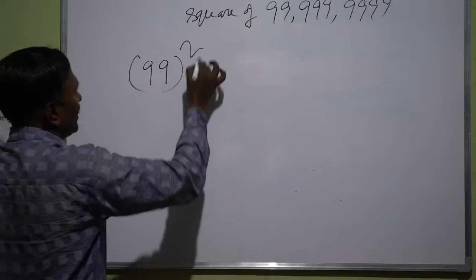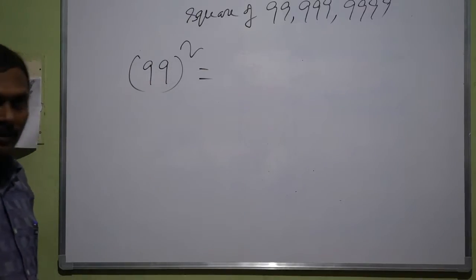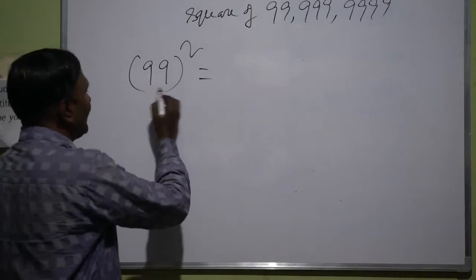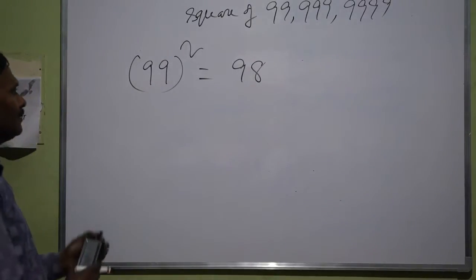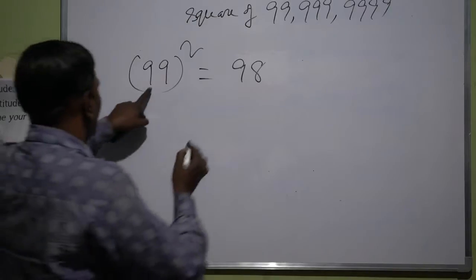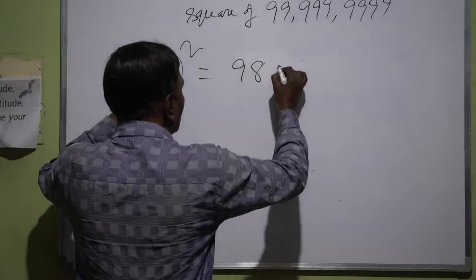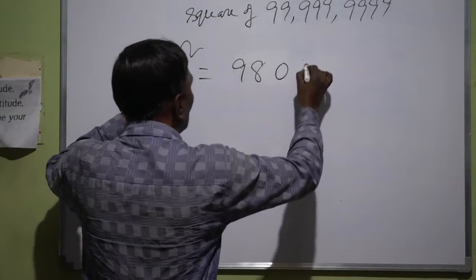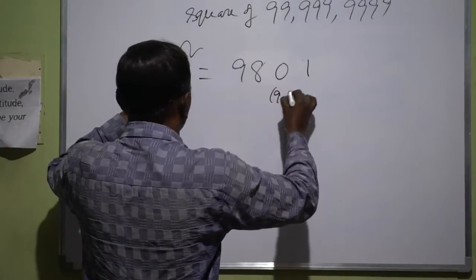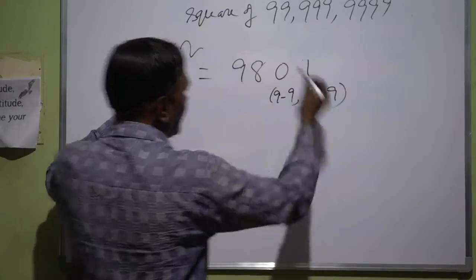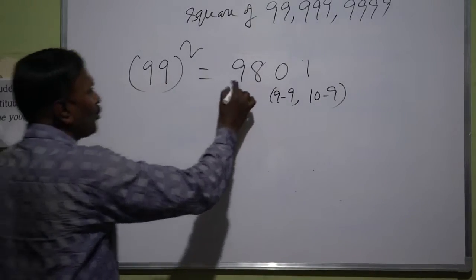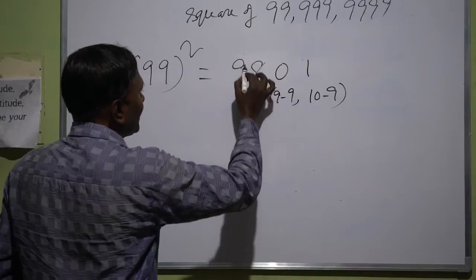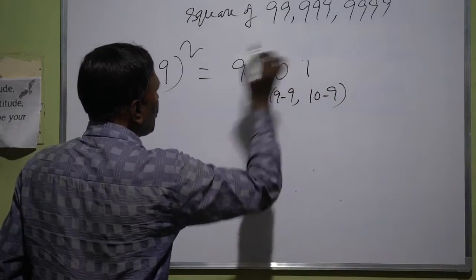99 square. Here the condition is 99 subtract 1, 98. Here 0, 1. This is 9 minus 9, 10 minus 9. And one more thing is here 2 digits is there. The digits output number is also 4 digits.